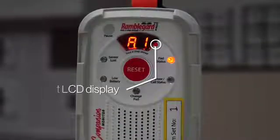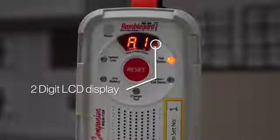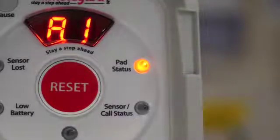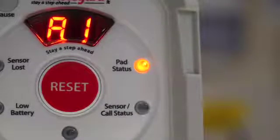The companion has a two-digit LCD display. All alarms are clearly visible on the LCD display and can be audible. It is also used for programming the companion.